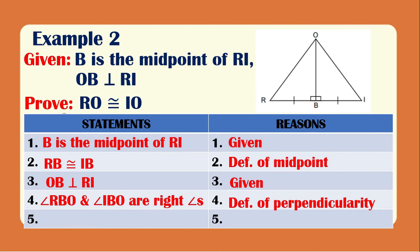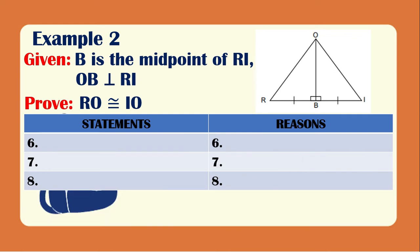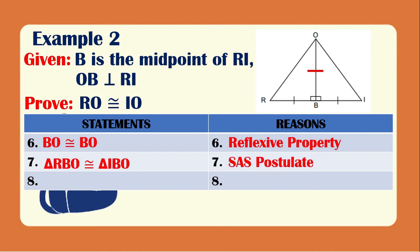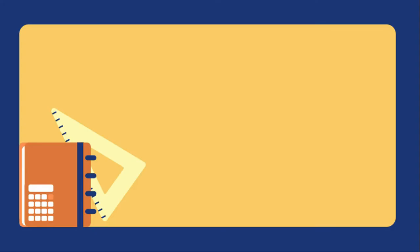For the fifth statement, angle RBO is congruent to angle IBO, since they are both right angles. The reason is: all right angles are congruent. For the sixth statement, side BO is congruent to side BO because of the reflexive property. For the seventh statement, triangle RBO is congruent to triangle IBO because of the SAS postulate. Since the two triangles are congruent, we can prove that RO is congruent to IO because of CPCTC.